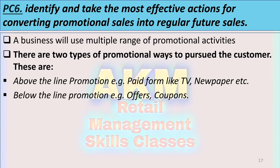PC6: Identify and take the most effective action for converting a promotional sale into a regular future sale. A business uses a range of promotional activities depending on its marketing strategy and budget. Promotion is categorized into two types: above-the-line promotion — paid forms like TV and newspaper advertising — and below-the-line promotion — where the business has direct control, such as direct mailing and money-off coupons, aimed directly at the target audience.